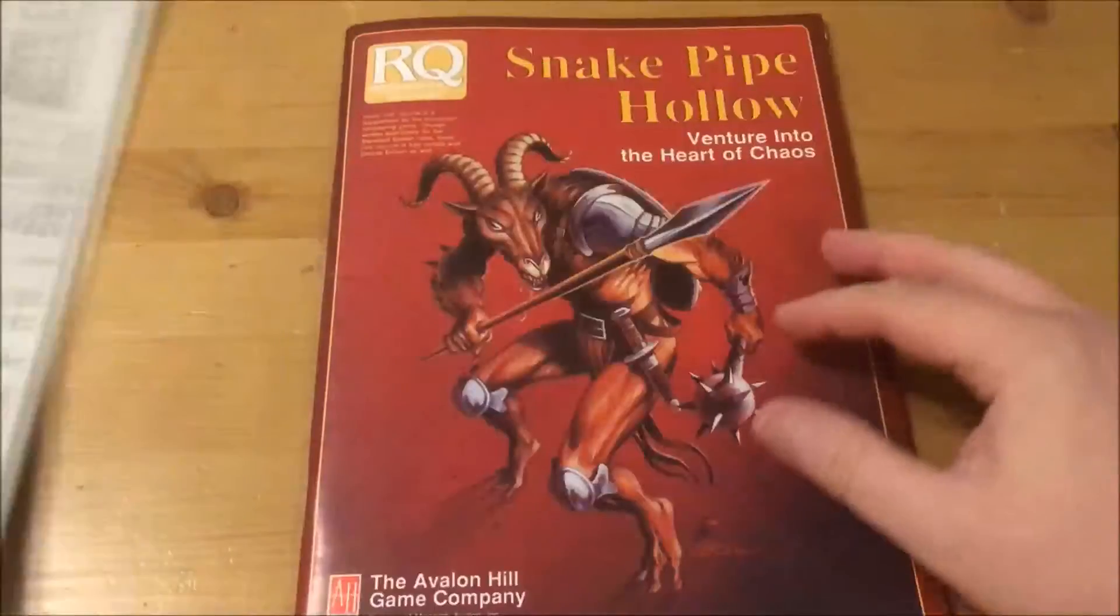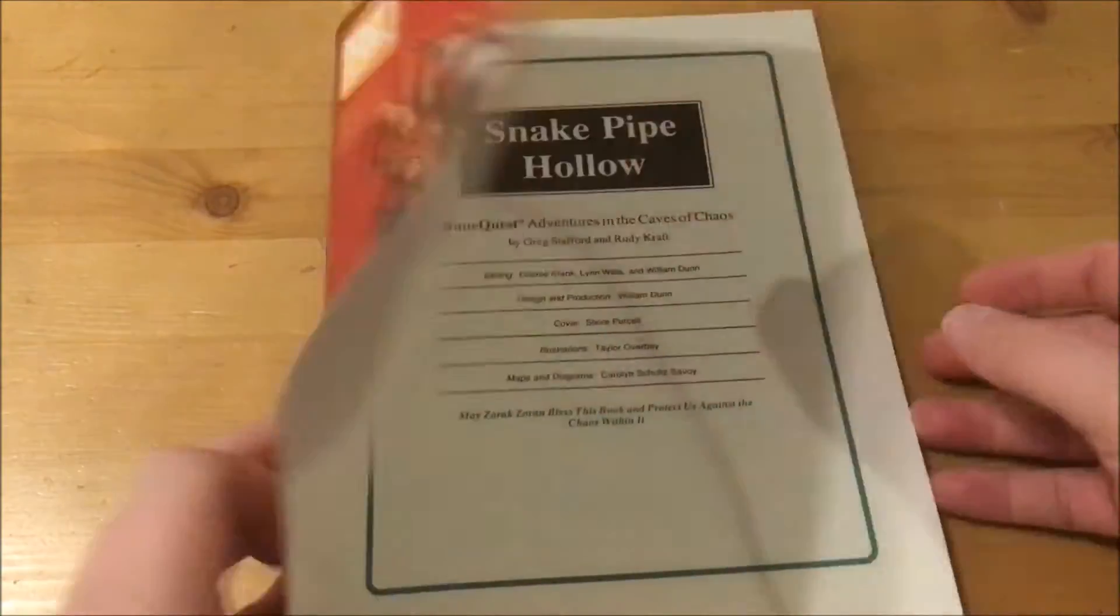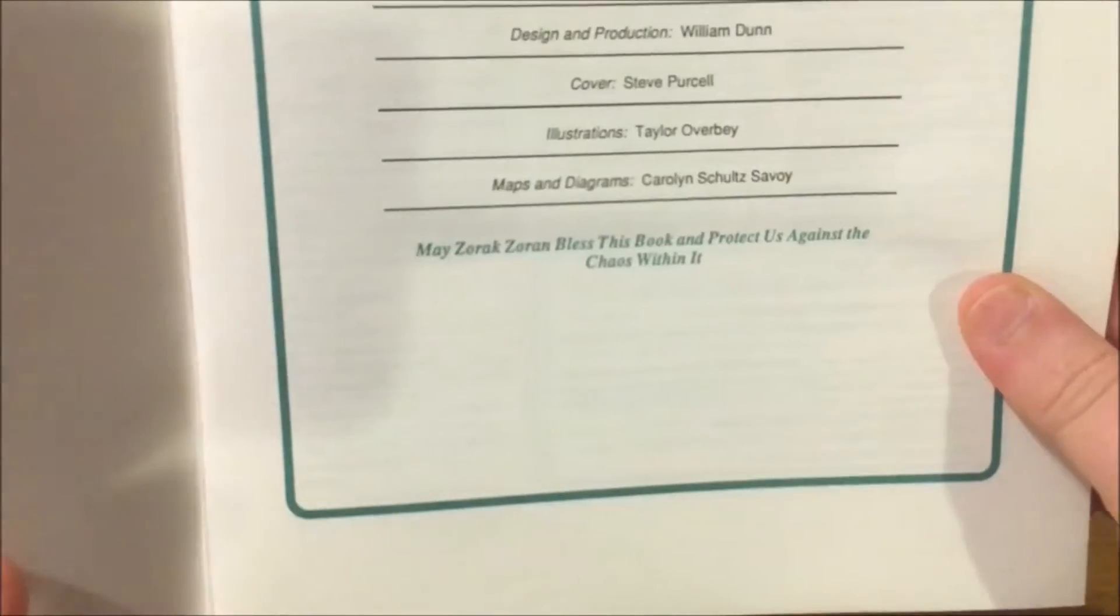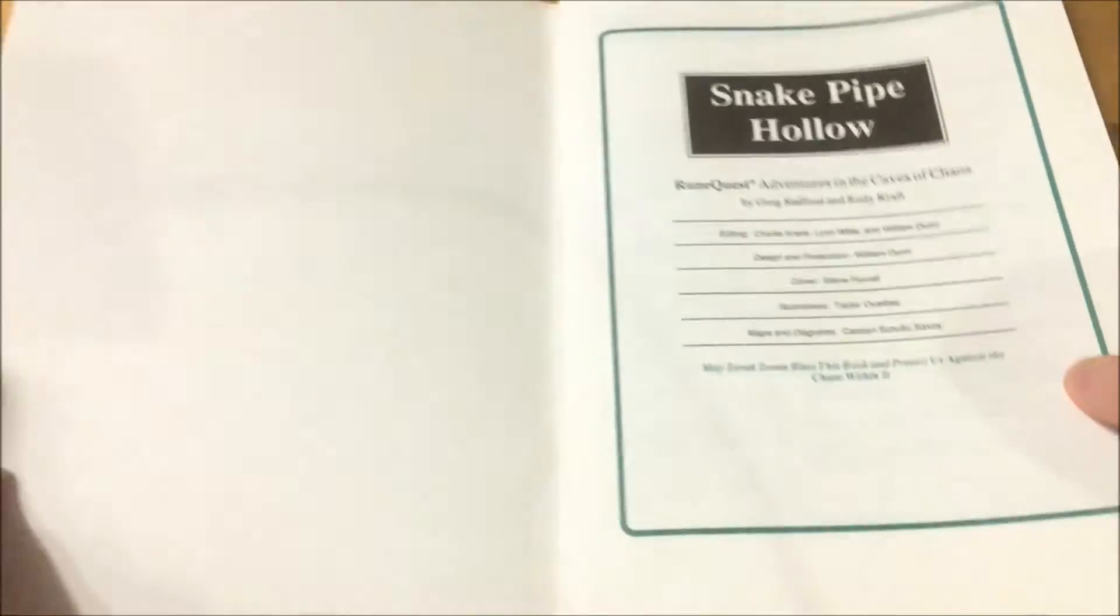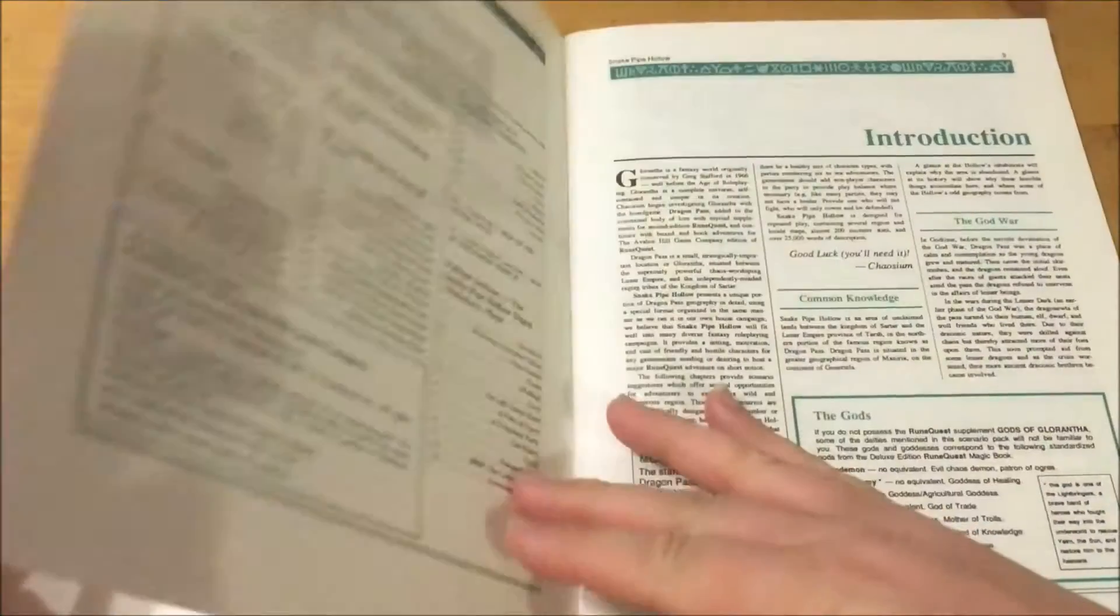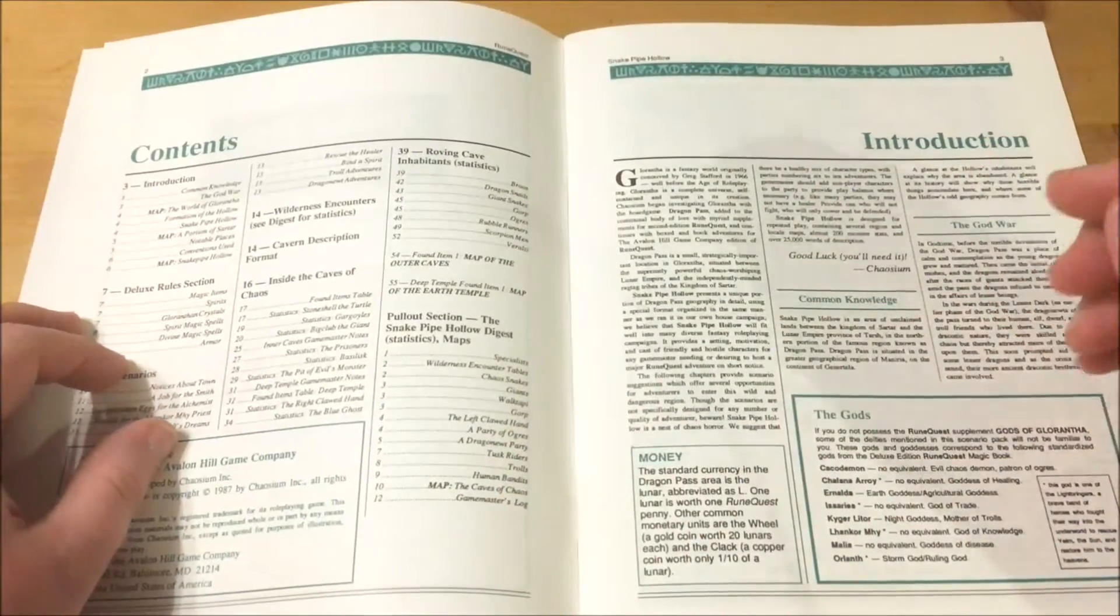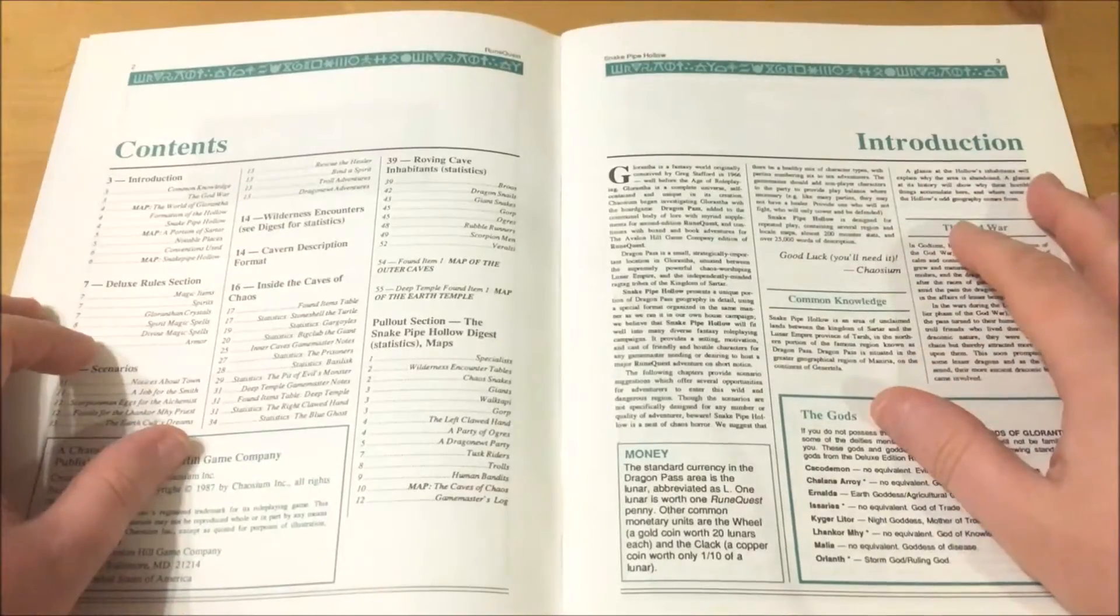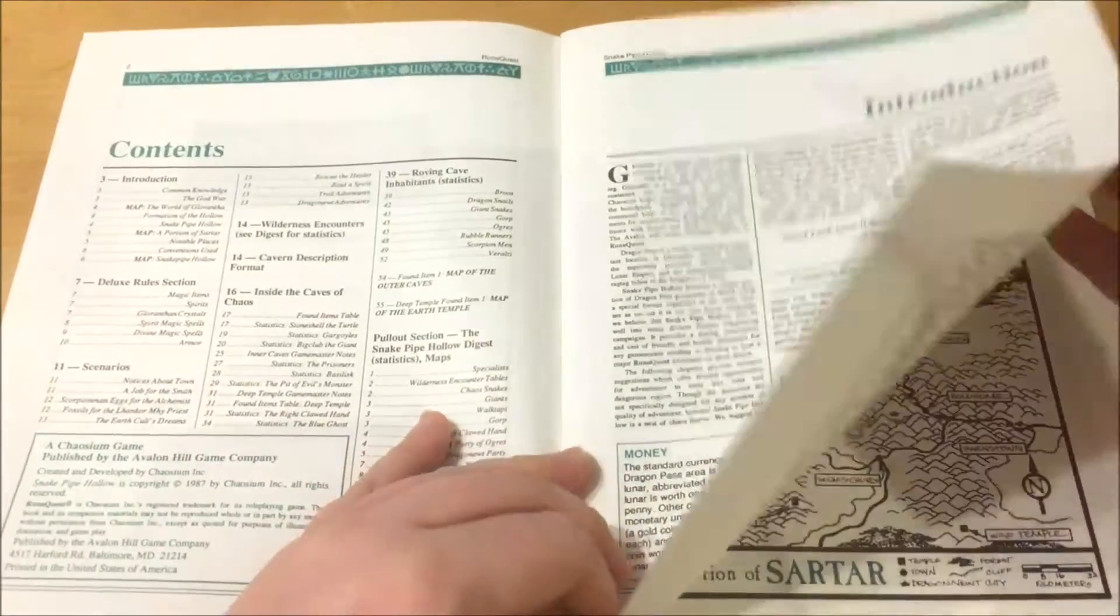Inside we are introduced with the invocation: May Zarak Zoran bless this book and protect us against the chaos within it. Zarak Zoran is the Uz god of hate, so what lies within must be particularly terrible for their name to be invoked. The introduction includes a few words from Chaosium and follows with common knowledge about Snake Pipe Hollow and a brief prehistory.